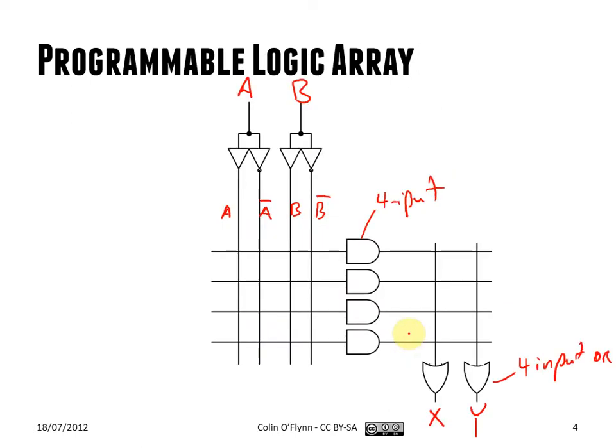So the first method that was created was this programmable logic array, where you could program. For example, you could say, I'm going to connect to this gate A and B, so this point is now A and B, and then maybe to this next gate. To the next gate, I'll connect A complement and B, so then this is A complement and B. To this gate, you just choose whatever you want. And then again, you can select how they get OR. So I have these various product terms.